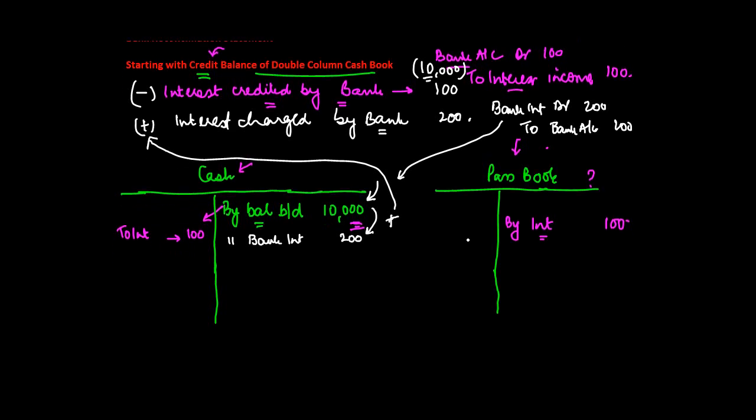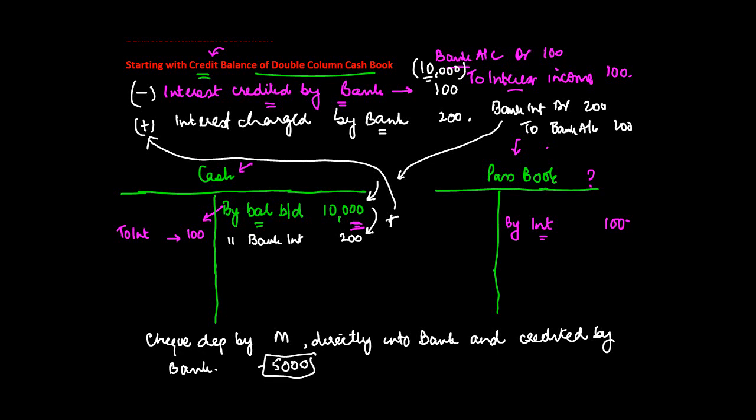Similarly, let's say check deposited by M directly into bank and credited by bank, 5,000. So in this case what has happened is that there was a person, customer maybe, because the customer is the one who gives us the money, who went and directly deposited a check in our bank account and bank credited this to our account.